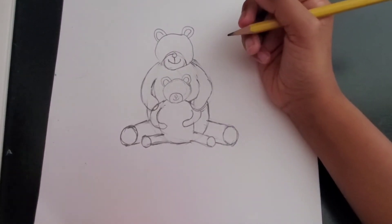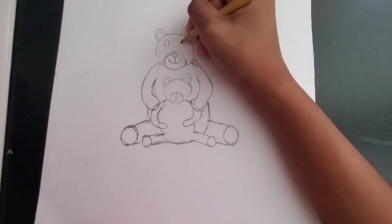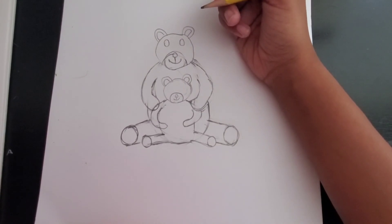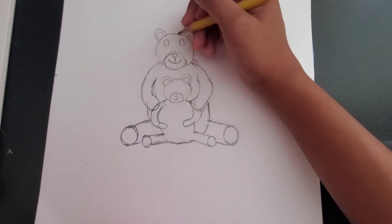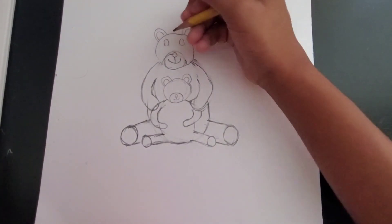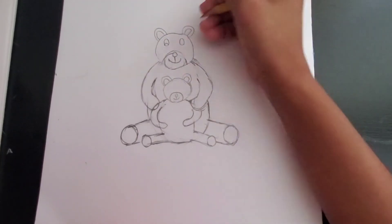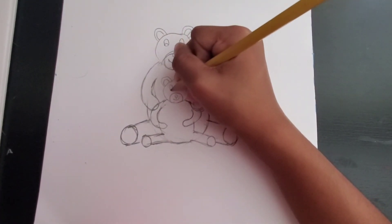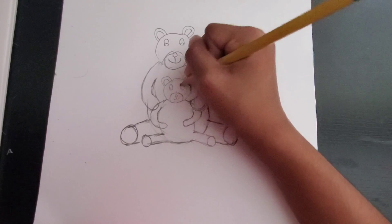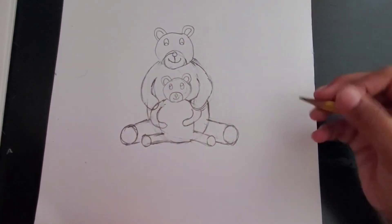Now for the eyes we will do two ovals. For the mama and the baby. So we want it to look like the mama is looking towards the baby. And the baby is looking towards the mama. So for the mama we will do his eyeballs below. And for the baby we will do it on top. And we will darken inside the eyeballs.